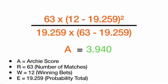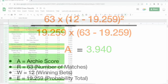To put September into the context of the full formula: 63 (total matches) multiplied by 12 (total winners) minus 19.259 (total probability), all squared — making sure to follow the correct order of operations with brackets — divided by 19.259 times the total number of games minus 19.259. That gives us an Archie score of 3.940, as we saw. Now let's look at the Archie score across all months from November 2021 to September 2022 with a much bigger data set of over 900 games.